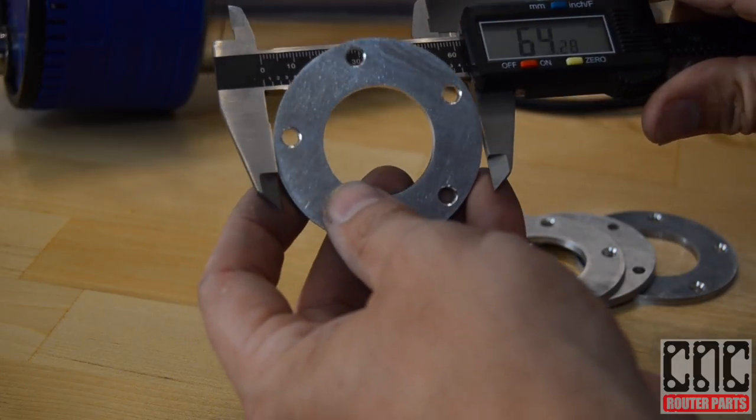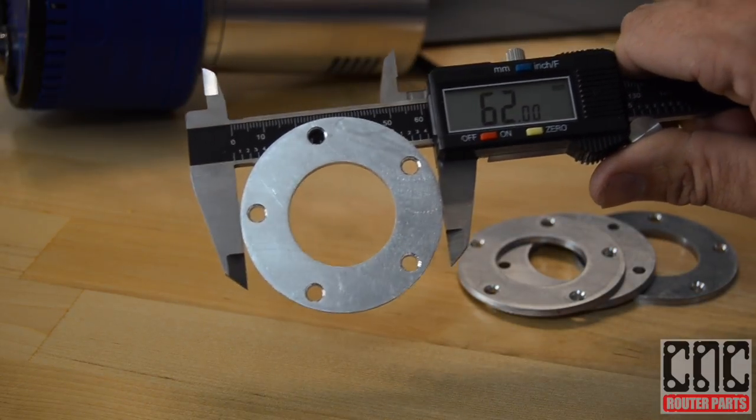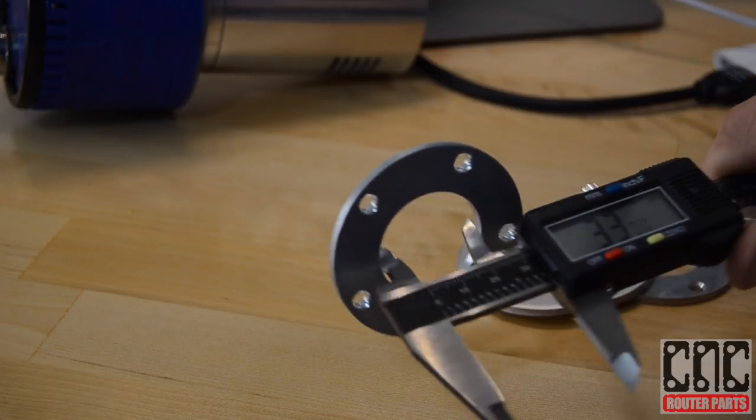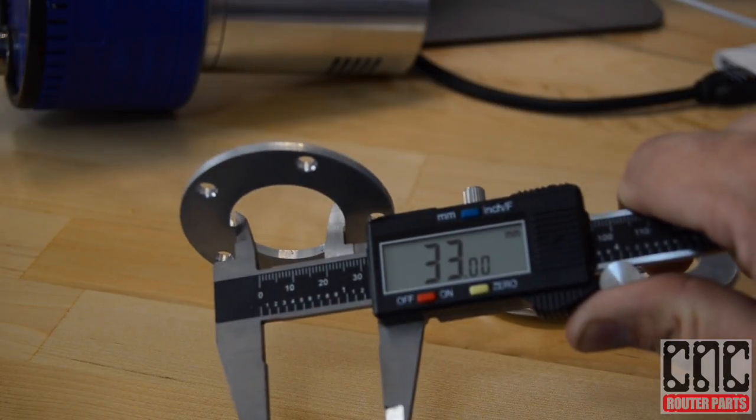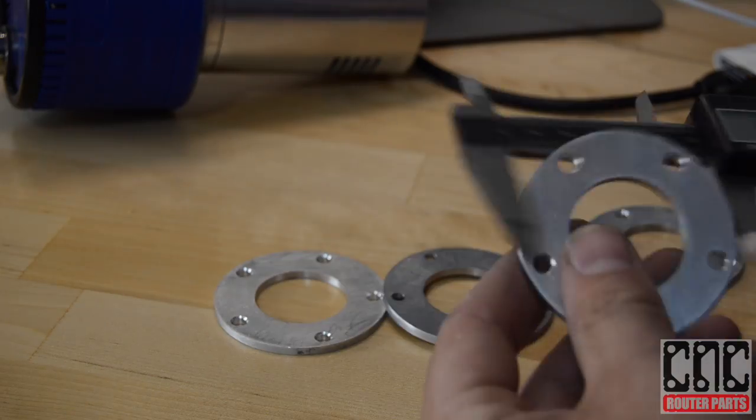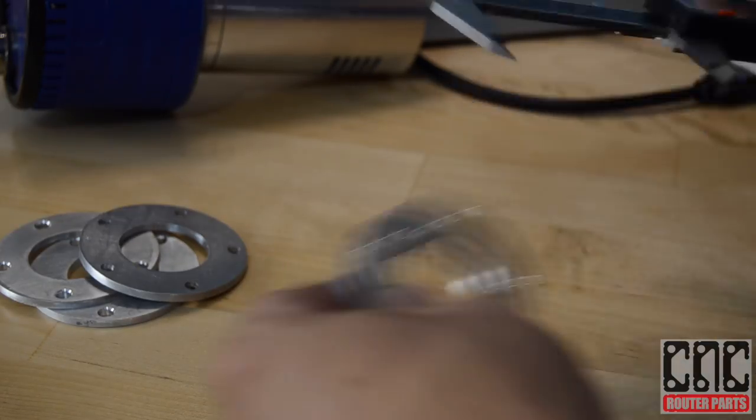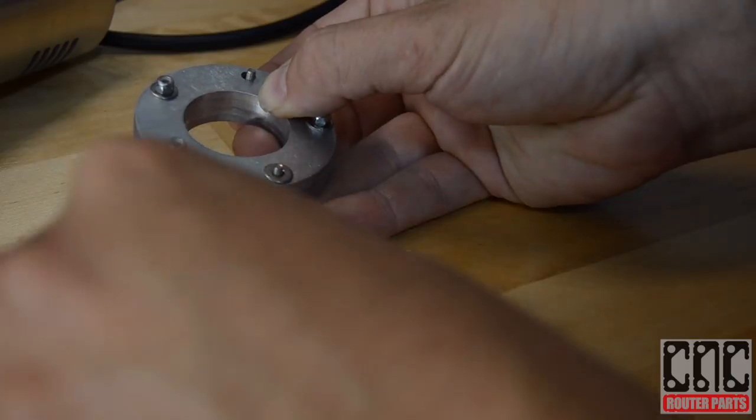The outside diameter reads 62 millimeters, that's good, and the inside diameter measures 33 millimeters, that's great. I'll check the others. I'm also curious to see if the countersinks are at the right depth so I'll bolt these plates together and see if the fastener heads are flush with the plate.